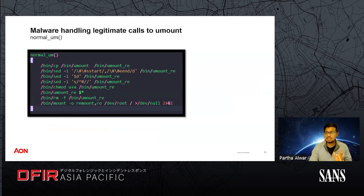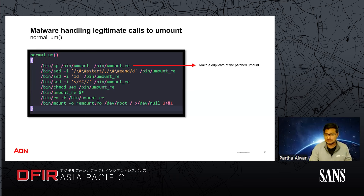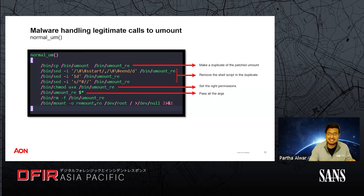The attacker had commented out the umount binary, which would make it unusable. So as part of the shell script, there's a function called normal_um included to handle any normal calls to umount without getting detected. This function first creates a duplicate of the patched umount. Thanks to the start and end tags, all references to the shell script are removed from the duplicate file. After setting the right permissions, the intercepted arguments are passed to the duplicated umount, and once execution finishes, the duplicated file is removed.